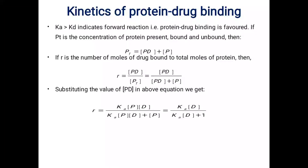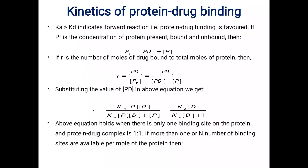By putting the value of PD, we get r equals Ka·PD divided by (Ka·PD plus P). After cancellation of P, we get r equals Ka·D divided by (Ka·D plus 1). This final equation holds when there is only one binding site on the protein and the protein drug complex is available in a 1:1 proportion. Some proteins have only a single binding site, while many proteins have multiple binding sites, so this equation is applicable only to proteins with a single binding site.